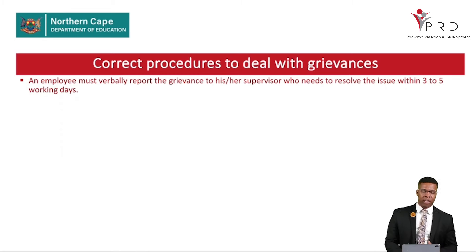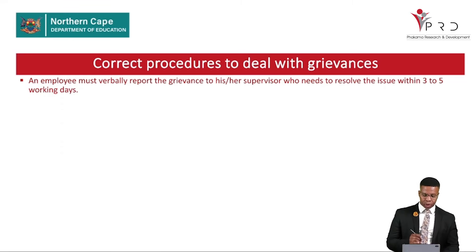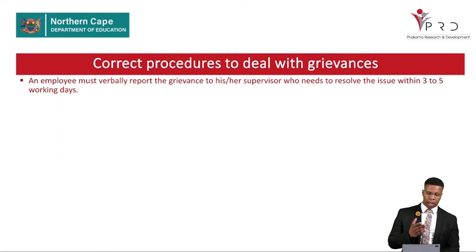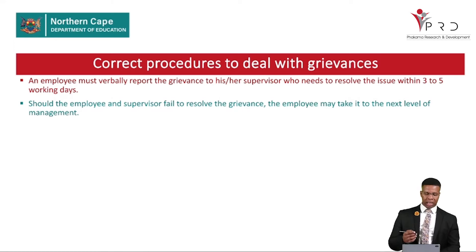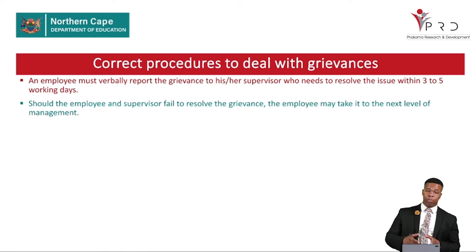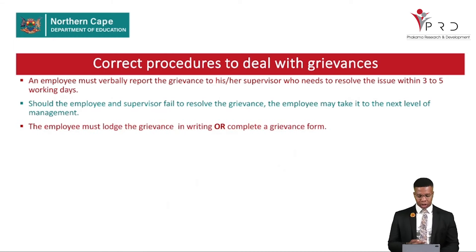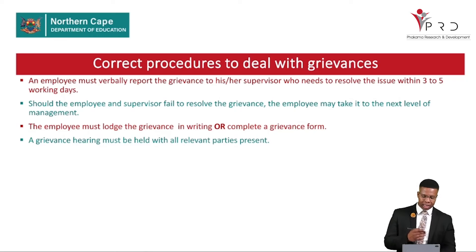The correct procedure to deal with grievances: step one — the employee must verbally report the grievance to their supervisor, who needs to resolve the issue within three to five working days. Step two — should the employee and supervisor fail to resolve the grievance, the employee may take it to the next level of management. The employee must log the grievance in writing or complete a grievance form, and a grievance hearing must be held with all relevant parties present.